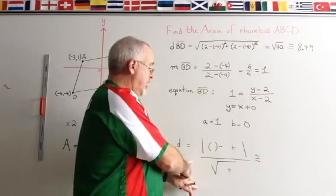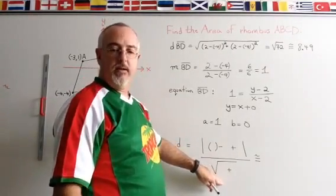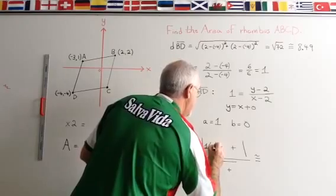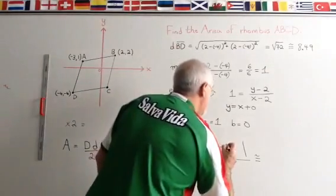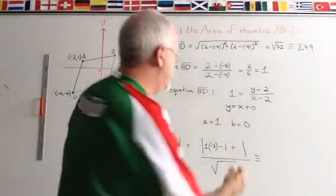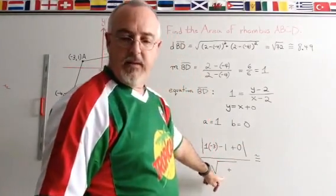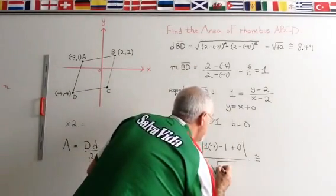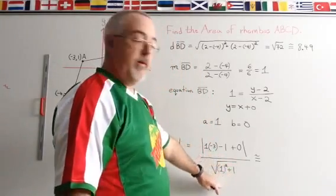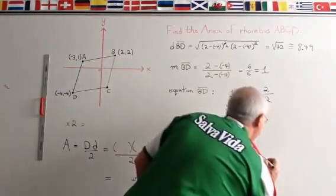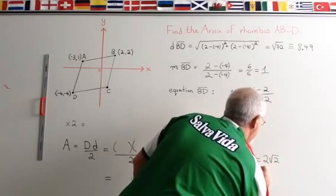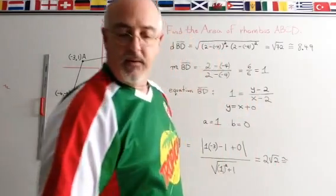Now it's time to use the distance between a point and a line formula, which I've also placed here. I just have to plug in the values. A is 1. X1 is negative 3. Y1 is 1. And B is 0. So down here in the denominator, I have the square root of A squared plus 1, which is 1 squared plus 1. When I simplify, this gives me 2 root 2, which is equal approximately to 2.83.